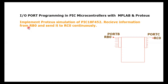Let's read the task statement for this specific tutorial. We have to implement a Proteus simulation of PIC18F452. We need to receive information from RB0 and send it to RC0. RB0 through RB7 are pin mnemonics of Port B, and RC0 through RC7 are pin mnemonics of Port C.